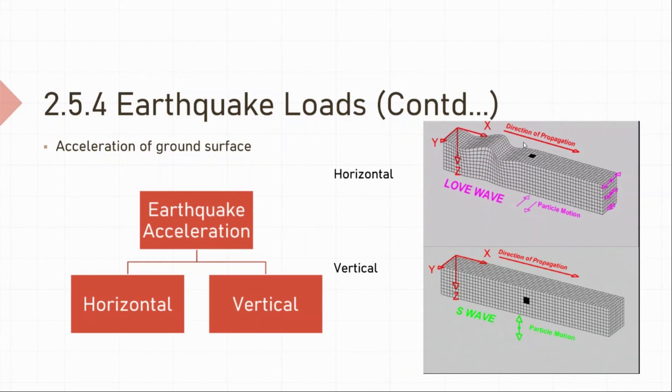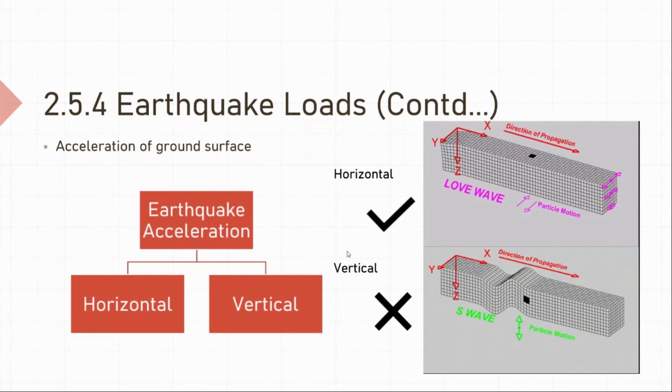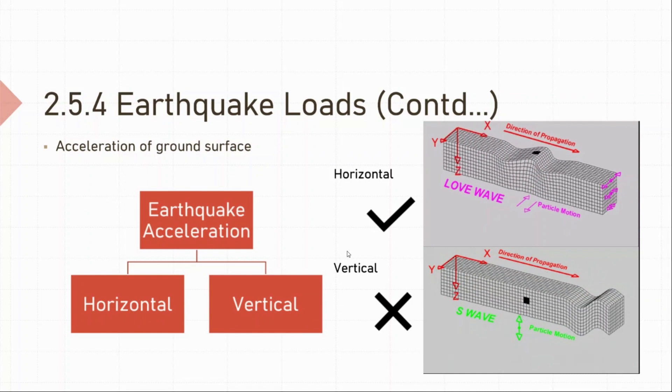I know it looks a little confusing, but if you closely observe the Y axis line, which is this one, you will clearly notice the difference in the two motions. If you still can't spot the difference, let me know in the Q and A. Now, the vertical motion of the earthquake is of less significance and is generally ignored in the calculations. But the horizontal motion is of great significance. So, earthquake loads calculated will generally be the effect from the horizontal component of the earthquake and not the vertical component.